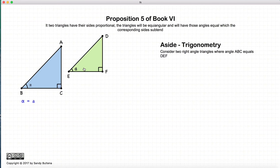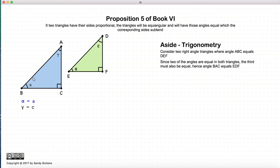Now if we have two triangles, two right angle triangles to be specific, let's assume that alpha is equal to A. Well, if alpha is equal to A, we have two angles that are equal to two angles. So the third angle must also be equal. So in other words, gamma will be equal to C.